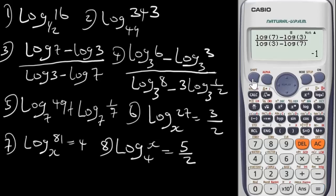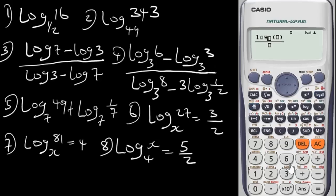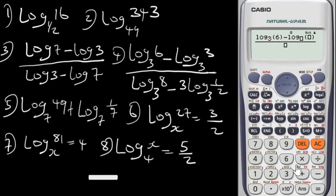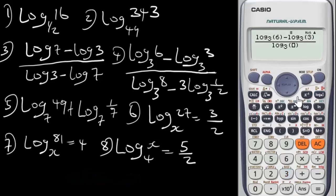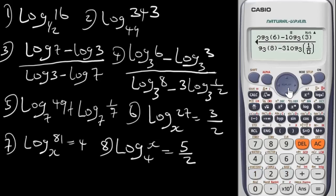Press equals and get the answer: minus 1. It's as simple as that. To get the anti-log, press Shift then this log button, enter minus 1, and press equals. Next, question 4 — the log is in base 3. We input log base 3 of 6, then minus log base 3 of 3, then minus log base 3 of 1/2. Always close your brackets.